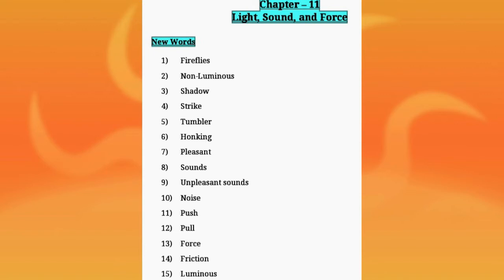Number 6: Honking — H-O-N-K-I-N-G — Honking means Tej abajan. Number 7: Pleasant — Pleasant means Suhani, Ruchikar, Manohar.